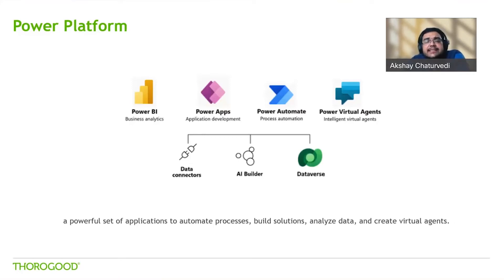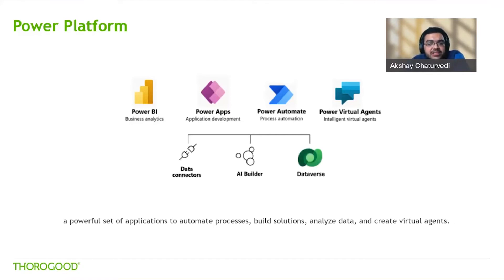Power Virtual Agents helps create bots, which is typically a quite complex and time-intensive process requiring long content update cycles and a team of experts. Power Virtual Agents gives anyone in your organization the ability to create powerful custom bots using an easy, code-free graphical interface, without the need for AI experts, data scientists, or teams of developers. A bot can interact with users, ask for clarifying information, and ultimately answer a user's question.